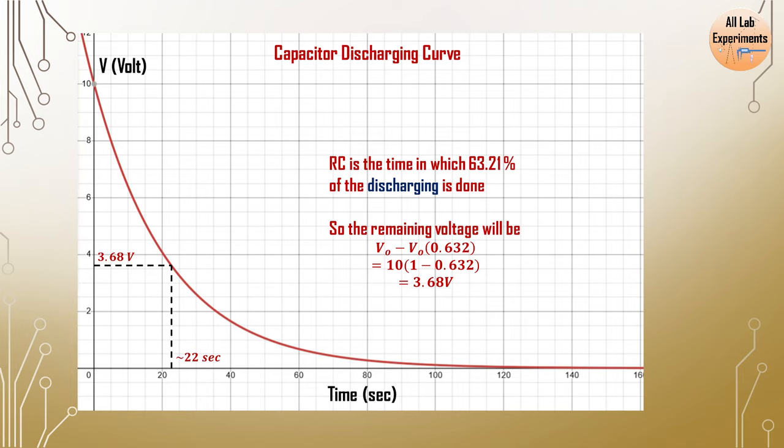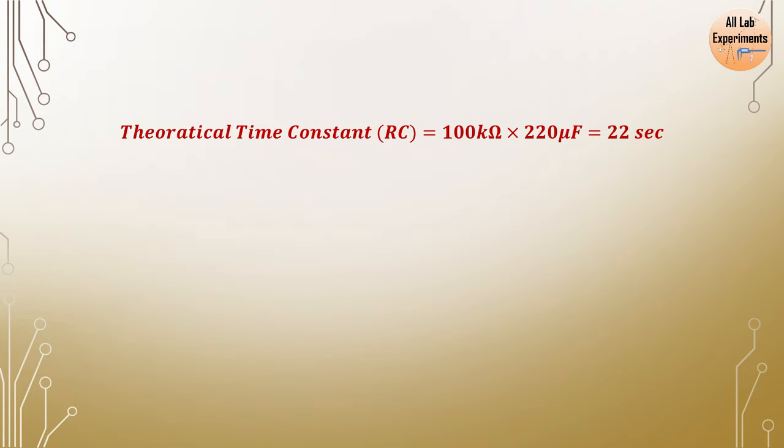Now as a final calculation we know that theoretical time constant is 100 kilohm into 220 microfarad equals 22 seconds. But experimentally we calculated two values of time constants while charging and discharging.